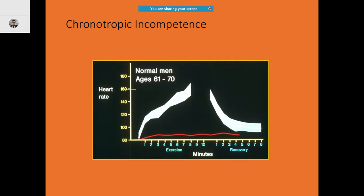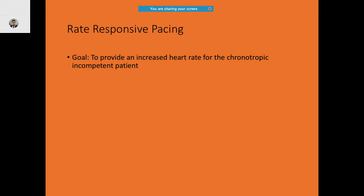In chronotropic incompetence there is failure to achieve the peak heart rate. The goal of rate-responsive pacing is to provide an increased heart rate for the chronotropically incompetent patient so they can lead a better life. You program a minimum rate and a maximum rate, and based on sensor input, pacing occurs at a rate between those limits.